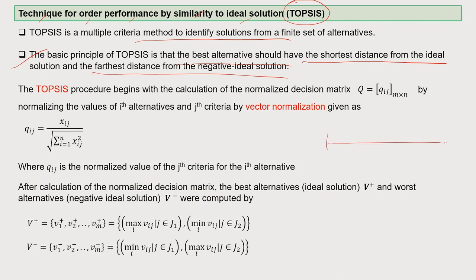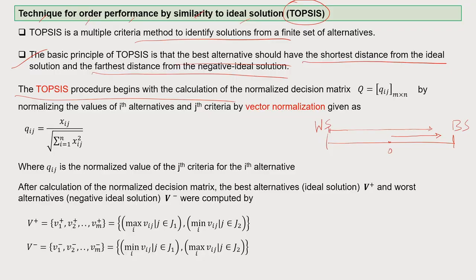Suppose you have a scale: this is your best solution and this is your worst solution, and you are here at the zero line. TOPSIS allows you to reach as close as possible to the absolute best solution, meaning you go closer to the best and far away from your worst alternatives. The TOPSIS procedure begins with the calculation of the normalized decision matrix, where q equals q_ij multiplied by m and n.